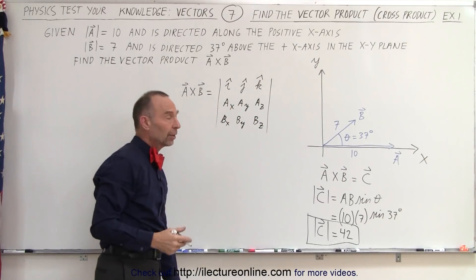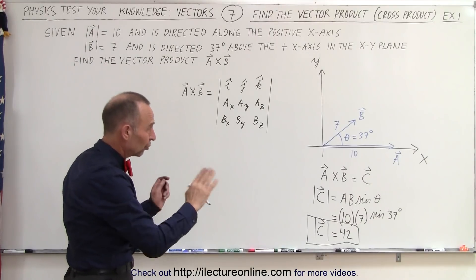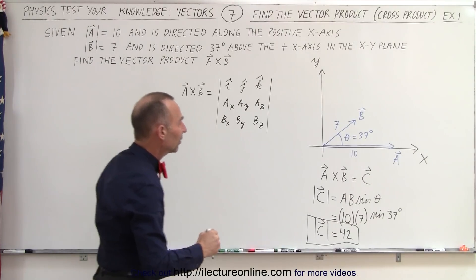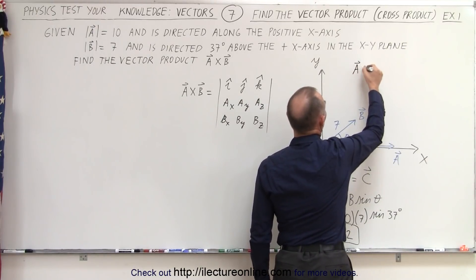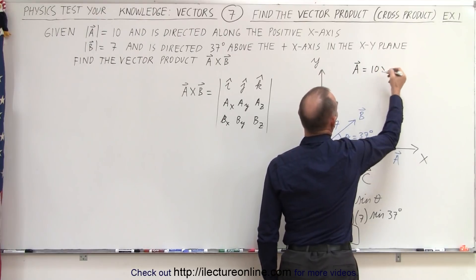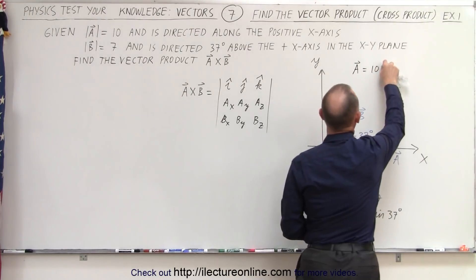In order to do that, we need to find the X and Y components of both vectors. They're in the X-Y plane, so there's no Z component here. But we can see that the vector A can be defined as being 10 units in the X direction or in the I direction.